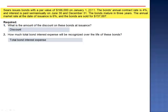Exercise 2. Sears issues bonds with a par value of $166,000 on January 1, 2011. The bond's annual contract rate is 4%, and interest is paid semi-annually on June 30 and December 31. The bonds mature in 3 years. The annual market rate at the date of issuance is 6%, and the bonds are sold for $157,007.